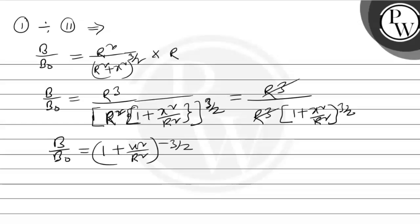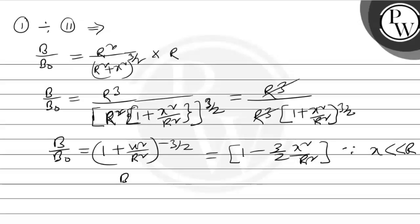Applying the binomial approximation — since x is very very much less than R — we expand: (1 + x²/R²)^(−3/2) ≈ 1 − (3/2)(x²/R²). Higher order terms cancel because x is very much less than R. So B/B₀ equals 1 − (3/2)(x²/R²).